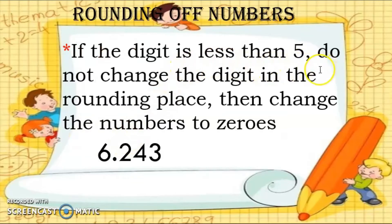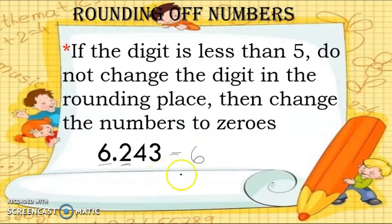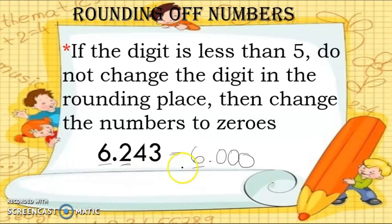If the digit to the right of the rounding place is less than 5, do not change the digit in the rounding place, then change the remaining numbers to zeros. The digit to the right is 2, and 2 is less than 5, so do not change the digit in the rounding place — it stays as 6. Then change the remaining digits to zeros, giving you three zeros, and that is your answer — that is how to round off a number to the nearest whole number.